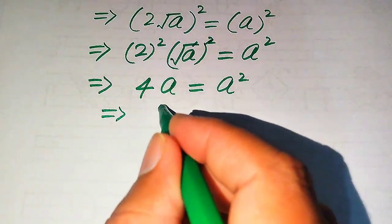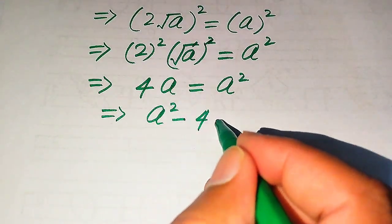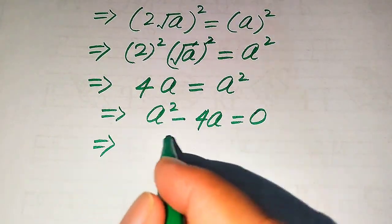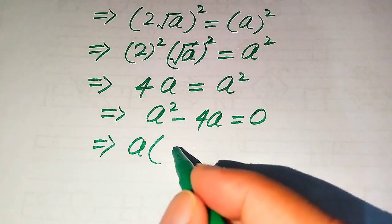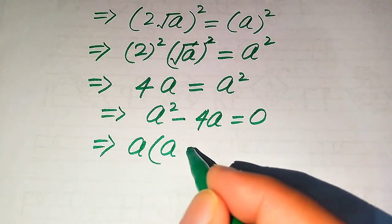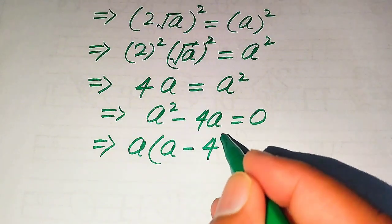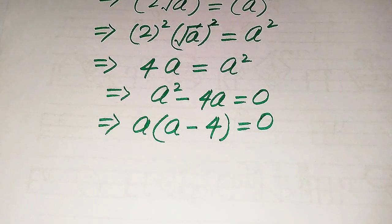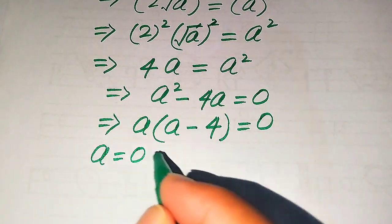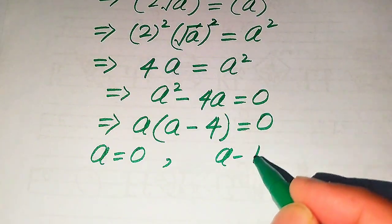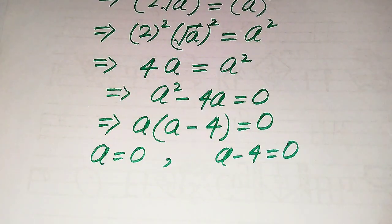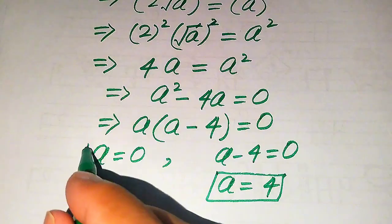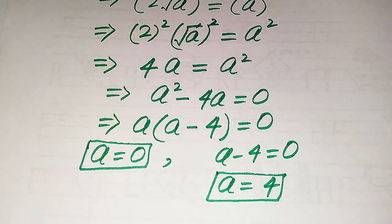We move the variable terms to the right hand side: 4a, which is positive, moves to the right hand side and becomes negative 4a, giving us 0 equals a squared minus 4a. We take common factor a, getting a times (a minus 4) equals zero. This gives us two cases: a equals zero, and a minus 4 equals zero, so a equals four.